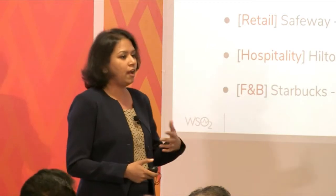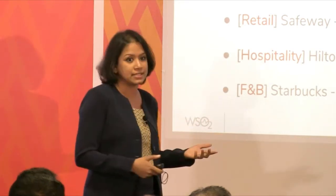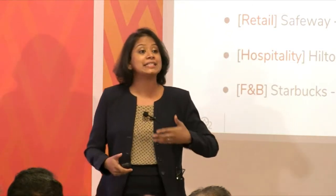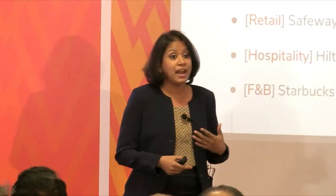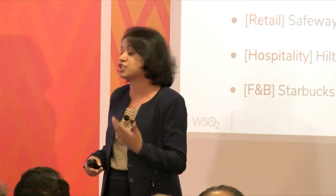Here are examples of established businesses that have already taken steps toward digital transformation. Netflix shifted from a DVD-rental-by-post service to a video-on-demand platform specializing in personalized entertainment recommendations. Hilti, a building construction tools company founded in 1941, now offers those tools as a service and tracks usage via IoT sensors.